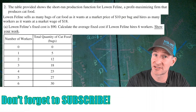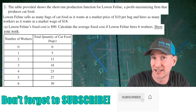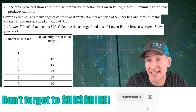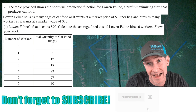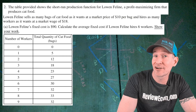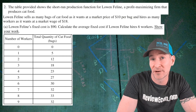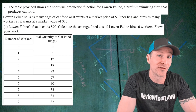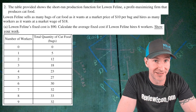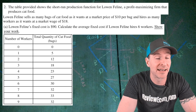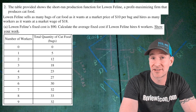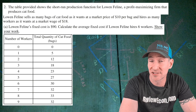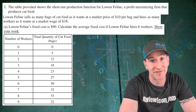This question starts off with a production function for Low-End Feline. Low-End Feline can sell as many bags of cat food at $10 a piece as it can possibly make, and they can hire as many workers as they want at the market wage of $18. That means they both buy and sell into perfectly competitive markets. For part A, it tells us that Low-End Feline has a fixed cost of $90, and we have to calculate the average fixed cost if Low-End Feline hires six workers. We have to show our work.